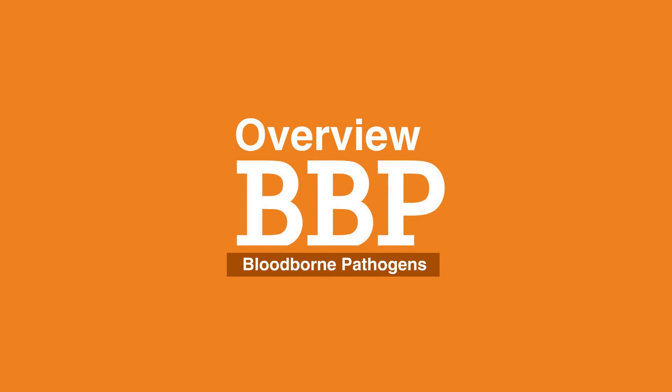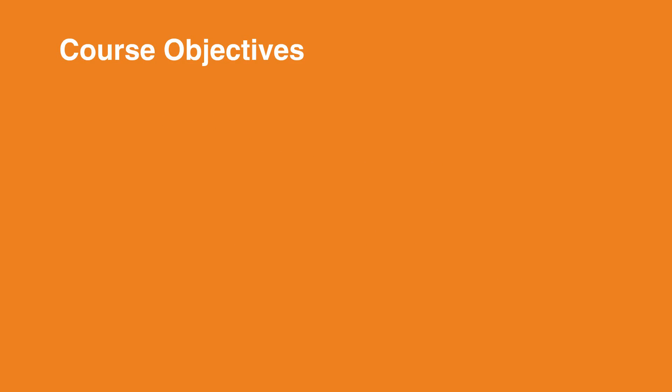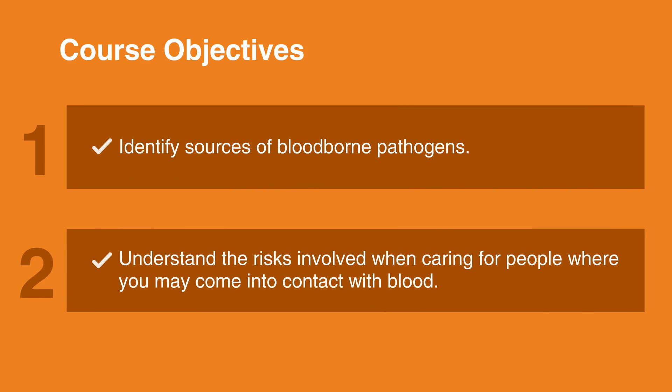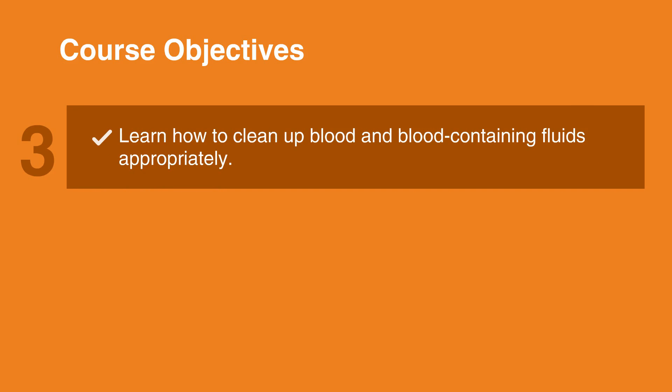Chapter 1: Overview. Course Objectives: 1. Identify sources of blood-borne pathogens. 2. Understand the risks involved when caring for people where you may come into contact with blood. 3. Learn how to clean up blood and blood-containing fluids appropriately.